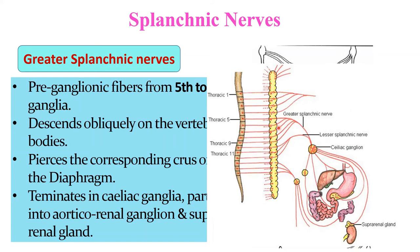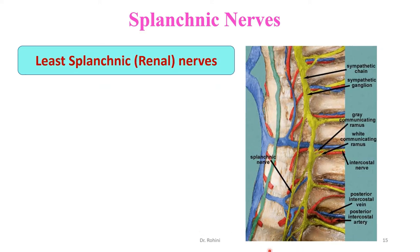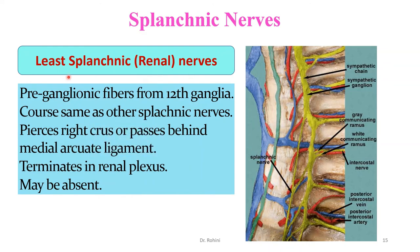The lesser splanchnic nerve is formed from preganglionic fibers of the 10th and 11th ganglia, following a similar course — descending obliquely, piercing the crus, and terminating in the celiac ganglion, aorticorenal ganglia, and suprarenal gland. The least splanchnic nerve, also called the renal nerve, is a tiny nerve that may even be absent. Its preganglionic fibers come from the 12th ganglion; it may pierce the corresponding crus or pass behind the medial arcuate ligament, and terminates in the renal plexus.